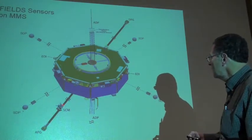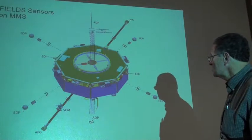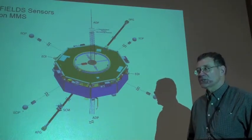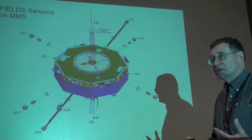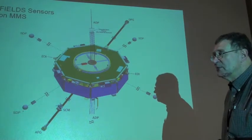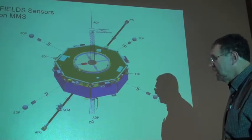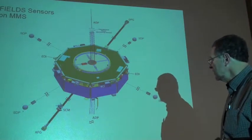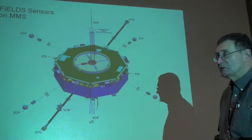They are complemented with a search coil magnetometer, which is essentially coils of wire that measure the AC magnetic field. These are combined together on MMS to provide a high frequency, high fidelity magnetic field signature of the reconnection regions.